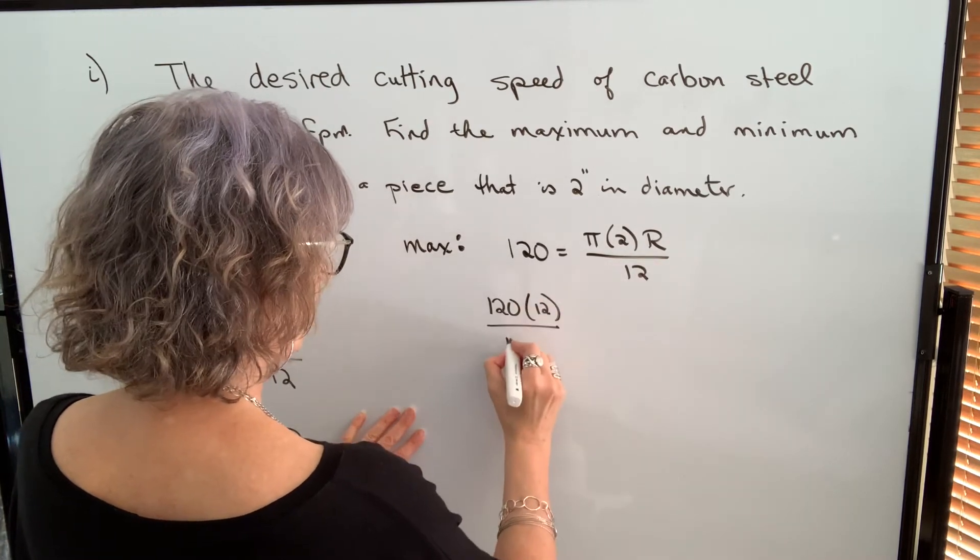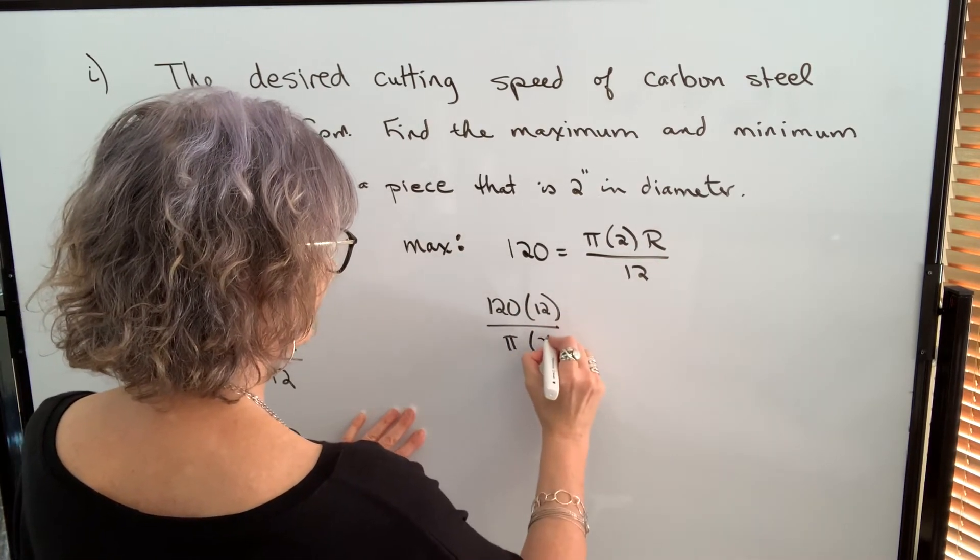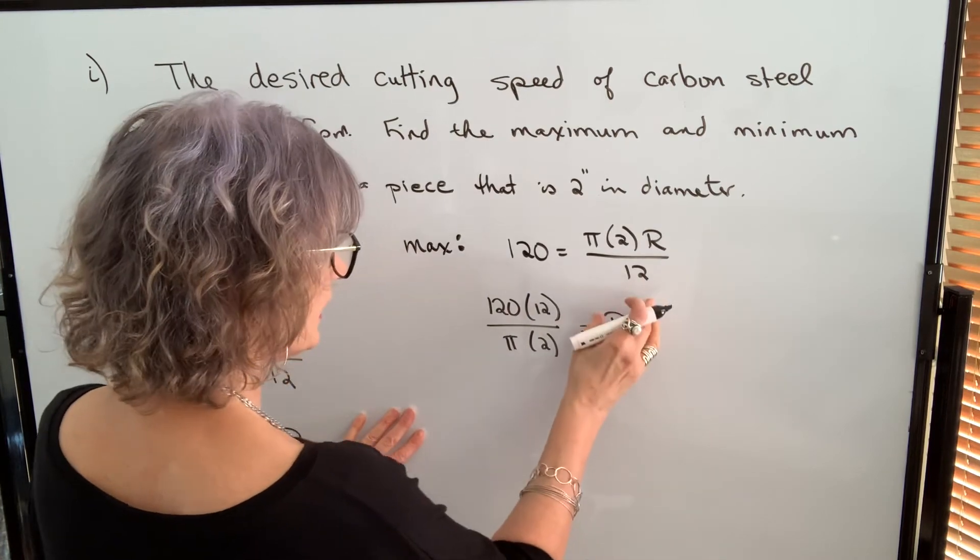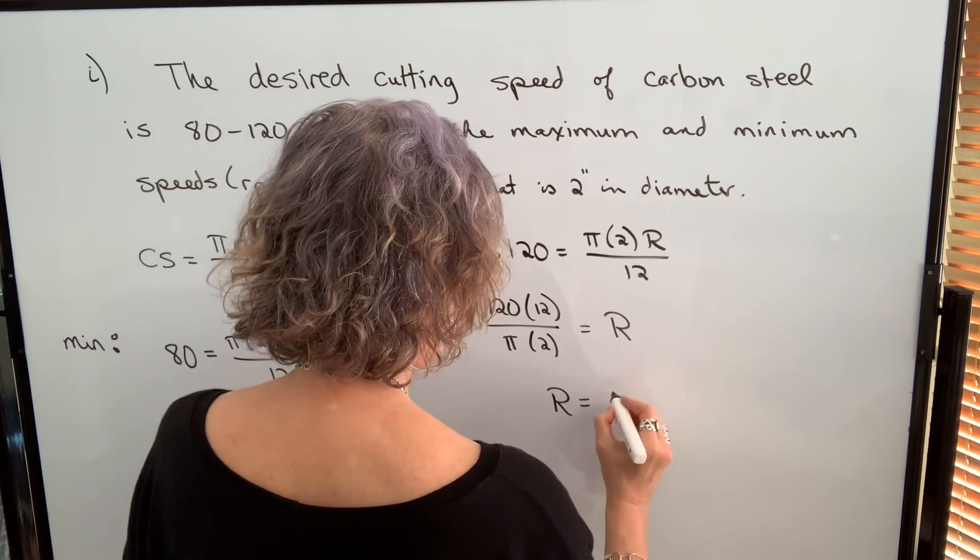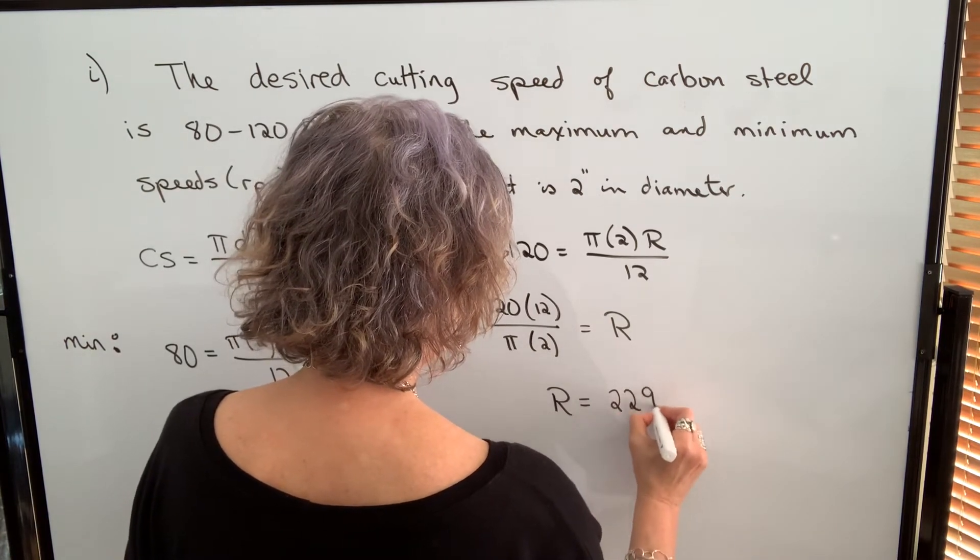I divide both sides by π, and I divide both sides by 2. When I do that, I get r isolated. And when I do this calculation, I get a value of 229 RPM.